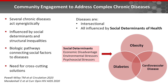Community engagement is critical in addressing complex chronic diseases, particularly those that are intersectional and act synergistically. We can consider obesity, diabetes, and cardiovascular disease to be these types of diseases. All of these diseases work together and are impacted by social determinants of health like economic disadvantage, environmental factors, and psychosocial stressors. Community engagement can help to understand biological pathways that connect social factors to chronic diseases. For instance, community engagement provides the opportunity to understand stressors that have the most impact in the daily lives of community members, and the trust built through community engagement allows for detailed examination of health factors that are influenced by these stressors. Ultimately, the goal is to build solutions not only to understand what is happening in the communities, but also to address the health needs within communities.